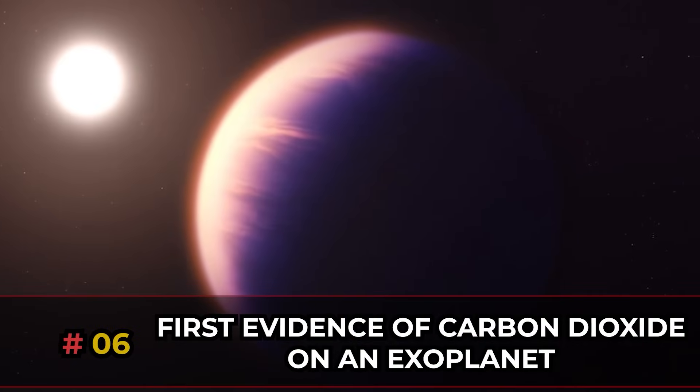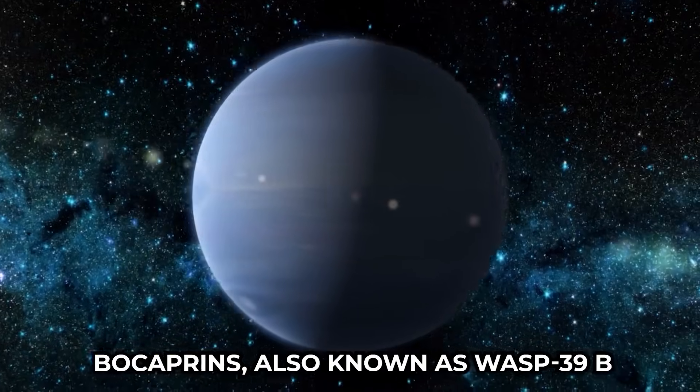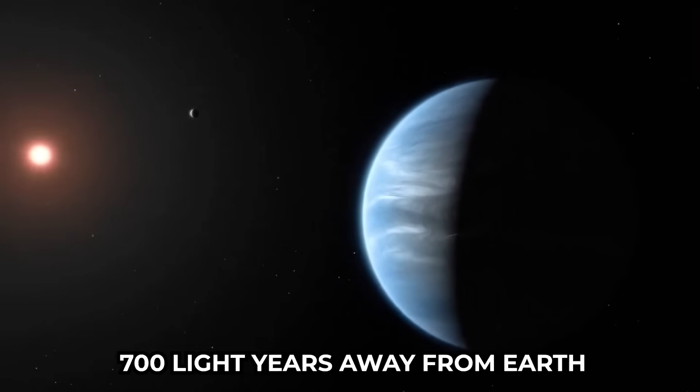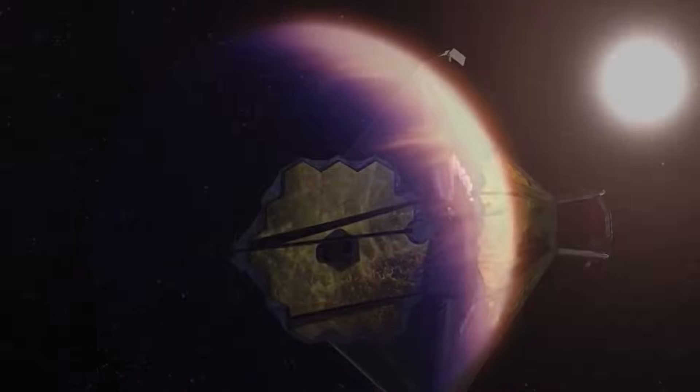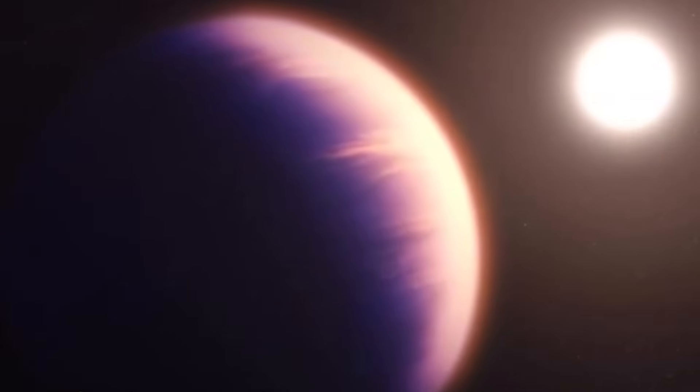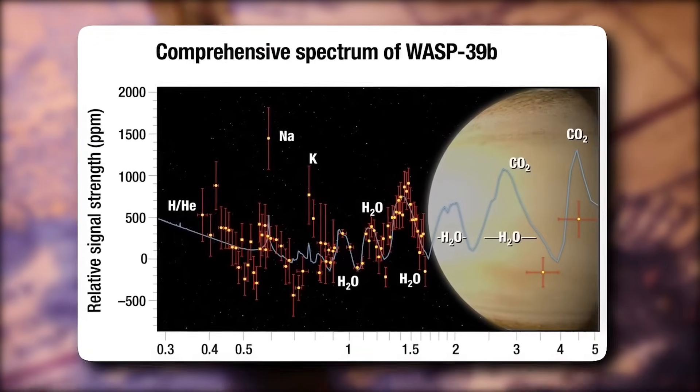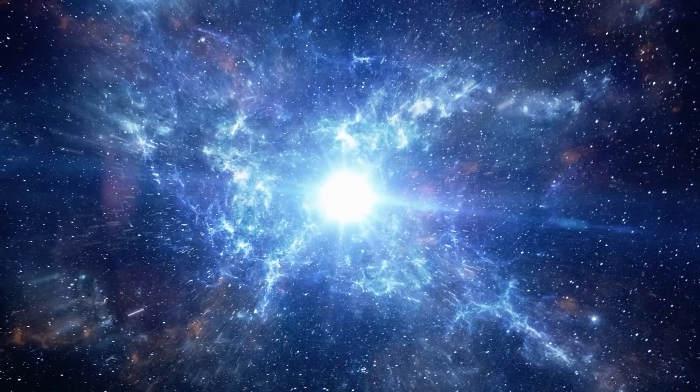First evidence of carbon dioxide on an exoplanet. Bocaprins, also known as WASP-39b, is a super-hot planet located a whopping 700 light-years away from Earth. It zooms around its star in just four Earth days. And here's the big news. The James Webb Space Telescope, on July 10, 2022, spotted traces of carbon dioxide on Bocaprins for the very first time in history. They used Webb's near-infrared spectrograph, NIRSpec, to make this incredible observation.